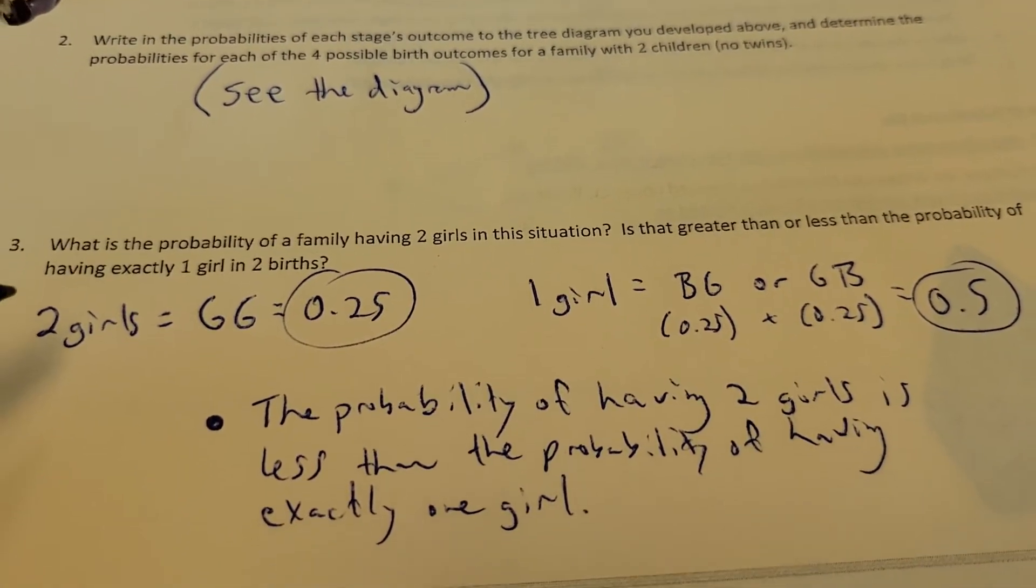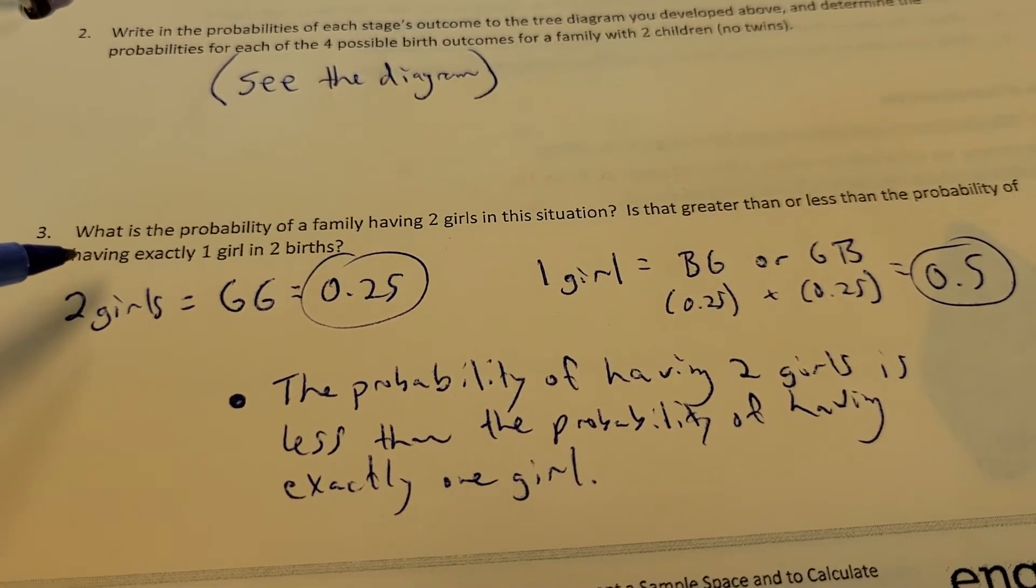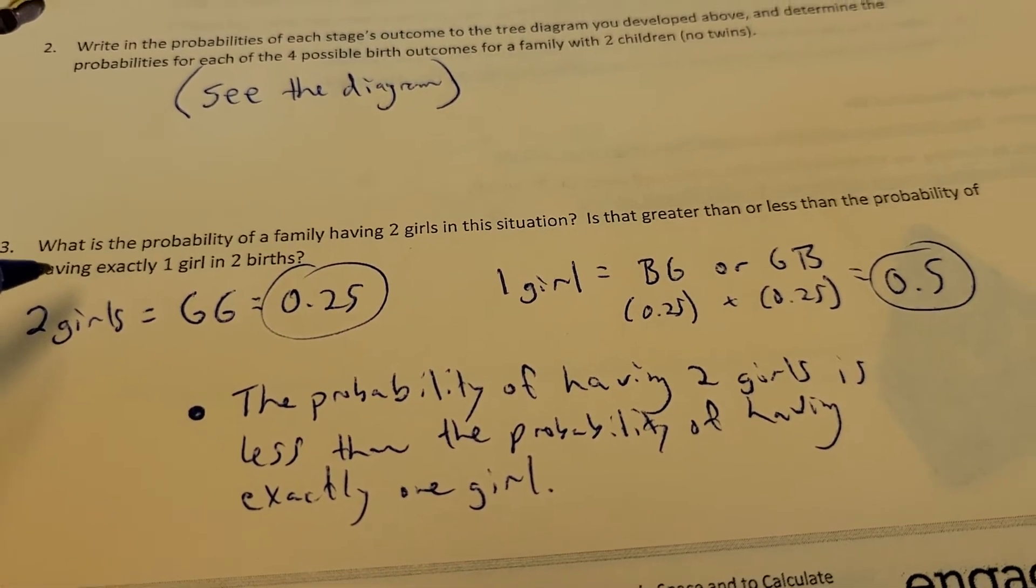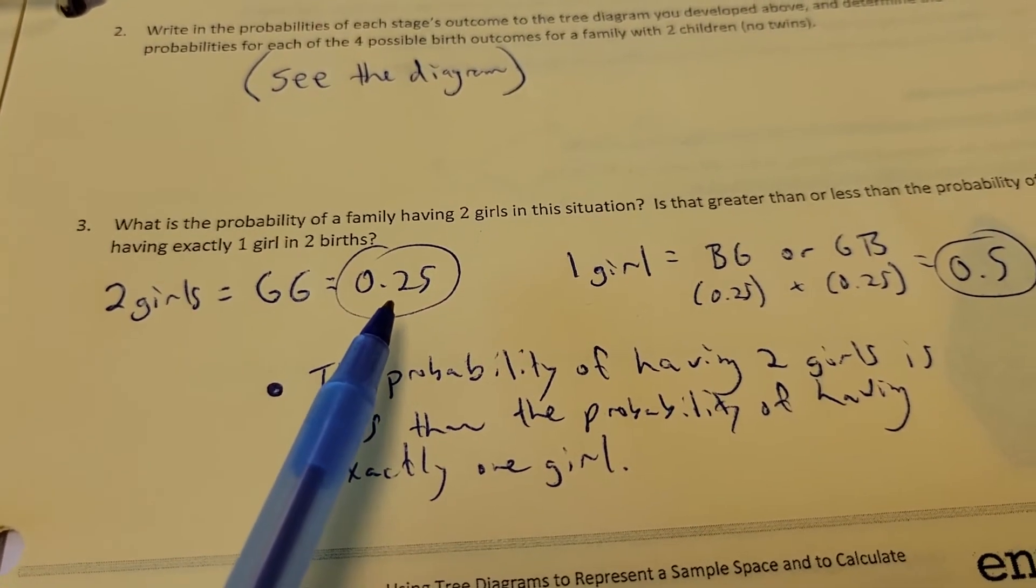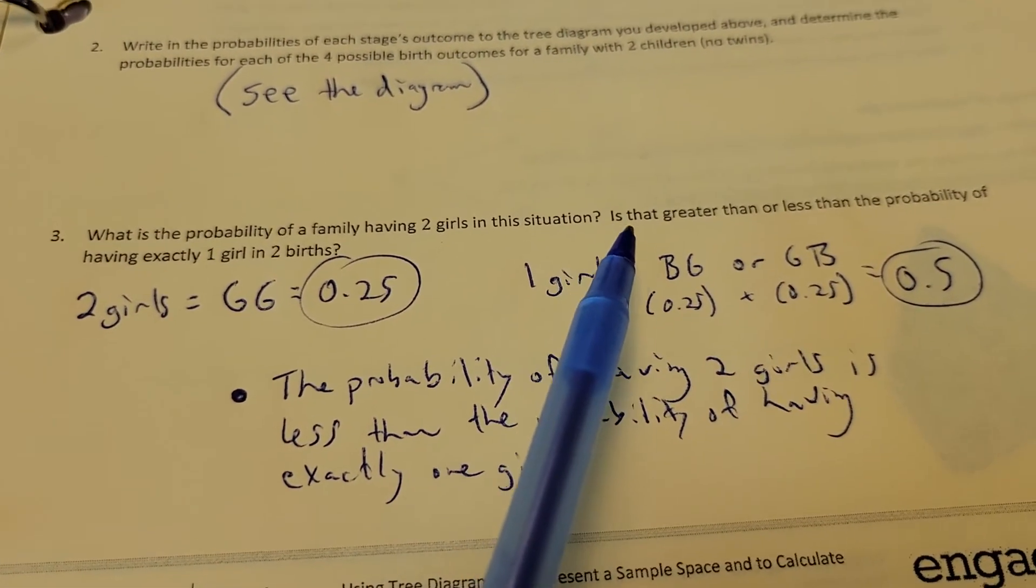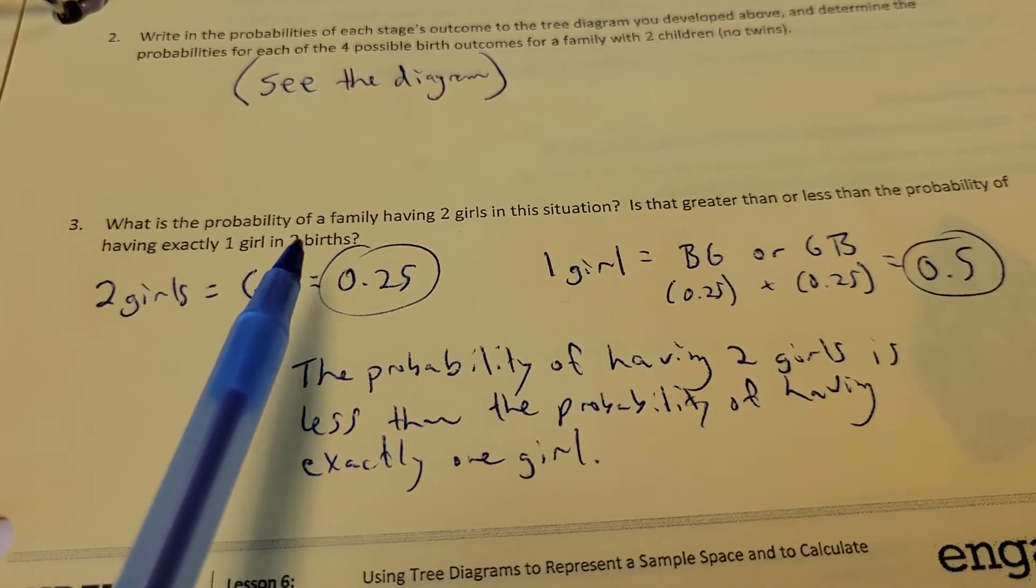We get that all set up on a tree diagram. Here's our question. What is the probability of a family having two girls in this situation? Well, two girls, girl, girl, was 0.25, we figured out. Is that greater or less than the probability of having exactly one girl?